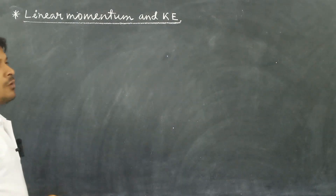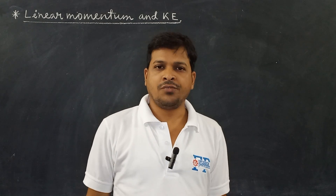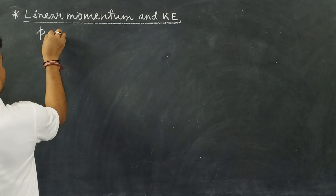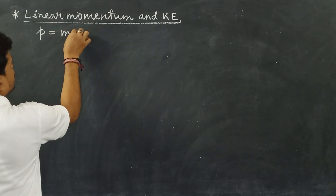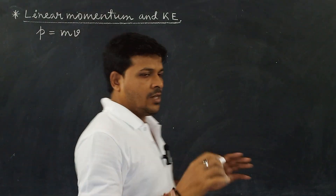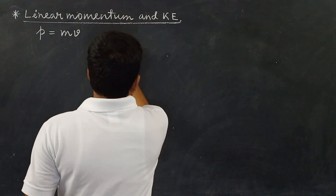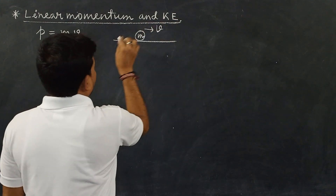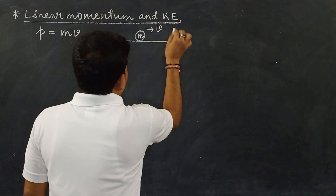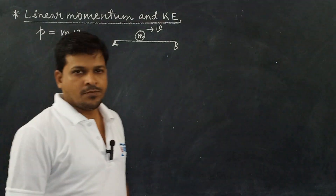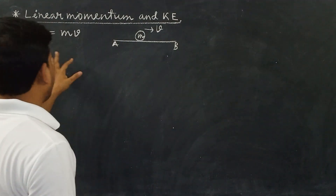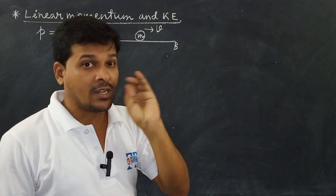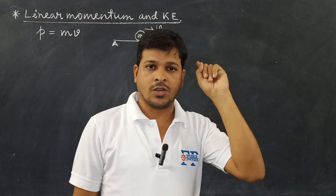If a body of mass m is moving with velocity v, then the linear momentum of the body, denoted by small p, is equal to mass into velocity v. So linear momentum p equals m into v. This is the dynamical property described by the mass and velocity of the body, which we learned in the previous video.